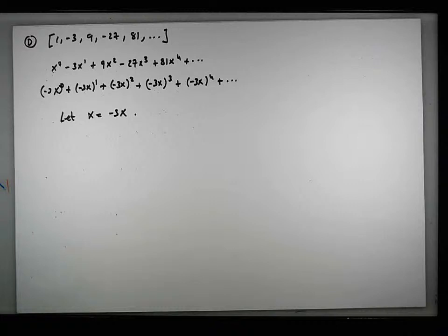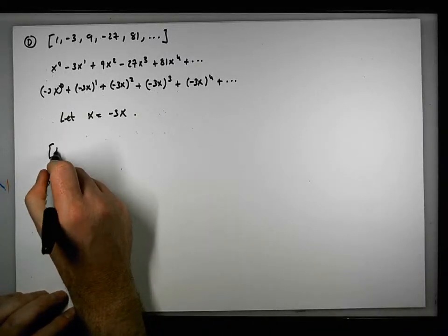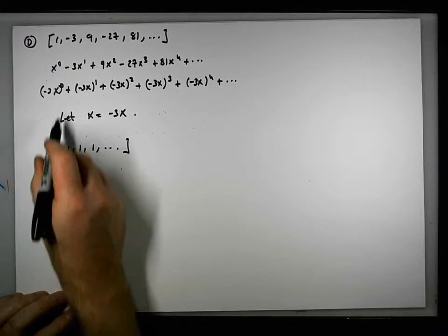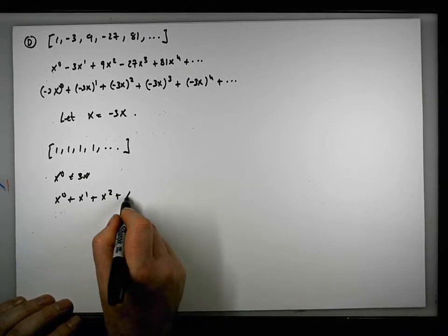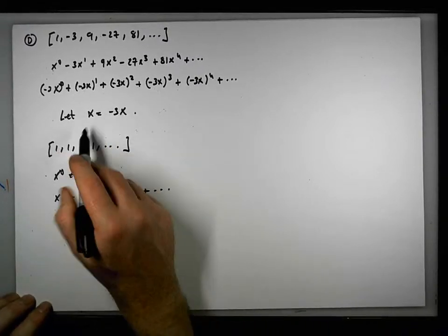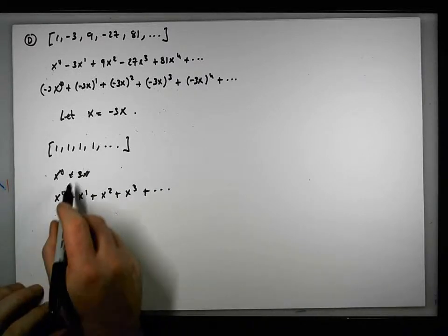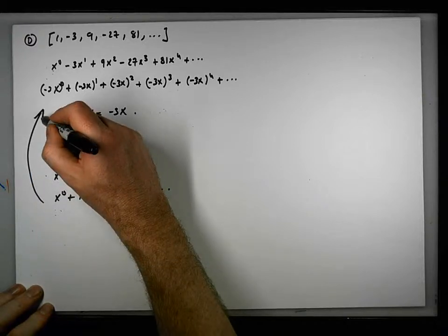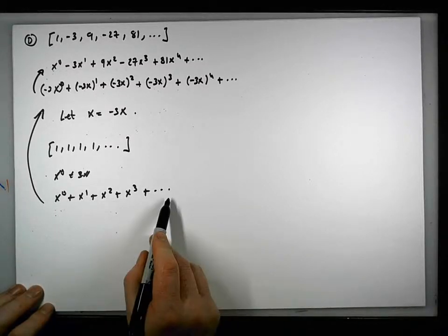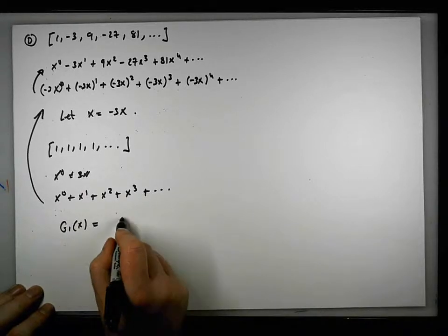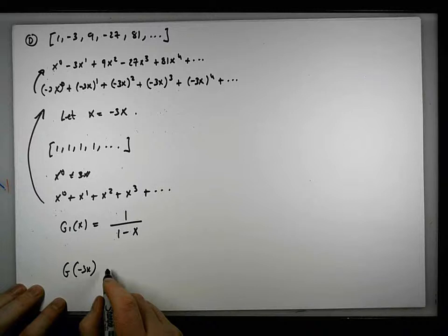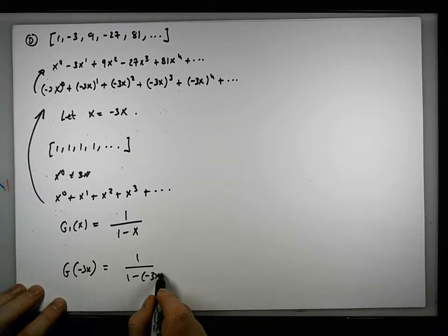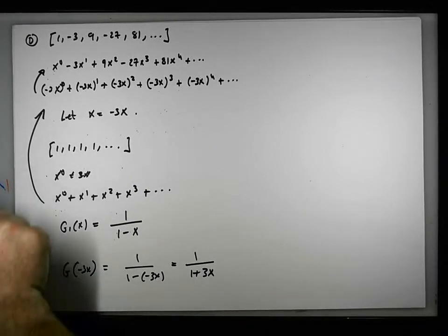So let's see what's going to happen now in that particular case. Let's do the substitution. Once again, let's start off with the constant sequence — the sequence 1, 1, 1, 1, 1, dot dot dot. Its power series is x to the 0 plus x to the 1 plus x squared plus x cubed plus dot dot dot. And what we're going to do is let x be minus 3x. When we let x equal minus 3x, we effectively get this thing here, which gives us this thing here. So the substitution into the constant sequence of minus 3x does the job. The constant sequence g1 of x is 1 over 1 minus x. So if we substitute in minus 3x, we have 1 over 1 minus minus 3x, which is the same as 1 over 1 plus 3x. And that's now our generating function.